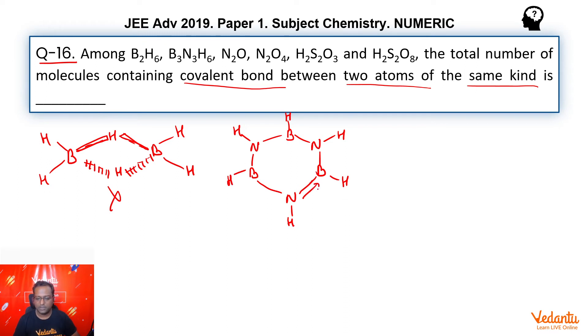And then we have these coordinate bonds. Because nitrogen has lone pair, boron has incomplete octet. So again, as you can see, it has no bond with itself.